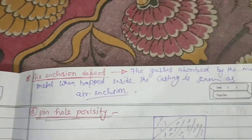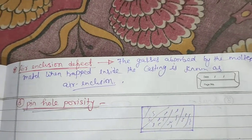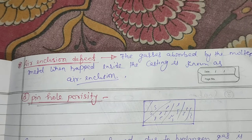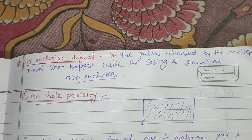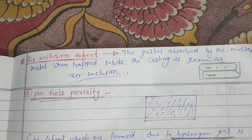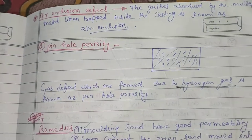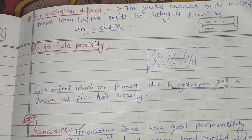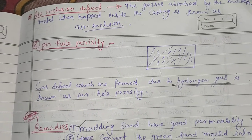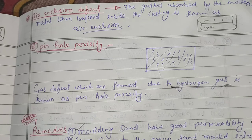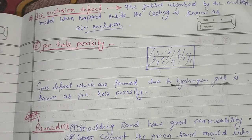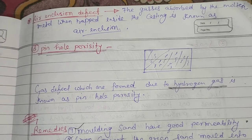The next defect is air inclusion — gases absorbed by the molten metal when trapped inside the casting form an air inclusion defect. The third gas defect is pinhole porosity, which is formed due to hydrogen gas. If hydrogen gas is mentioned, the defect will be pinhole porosity.